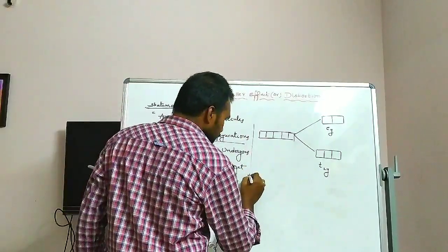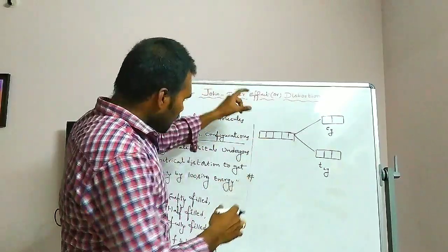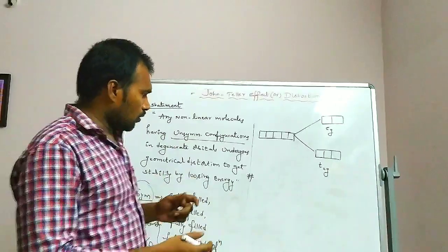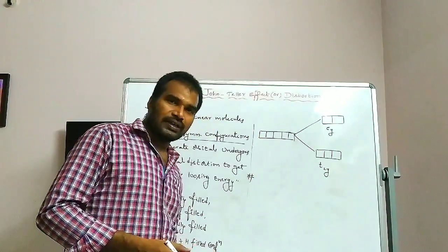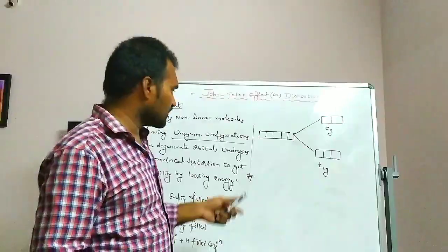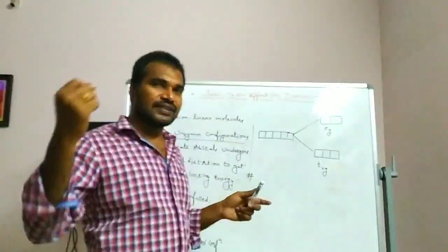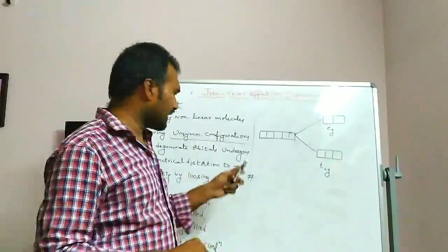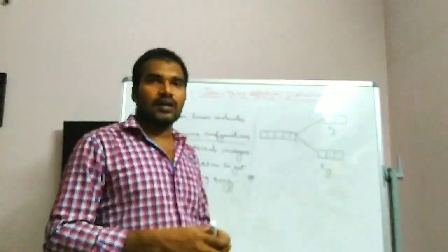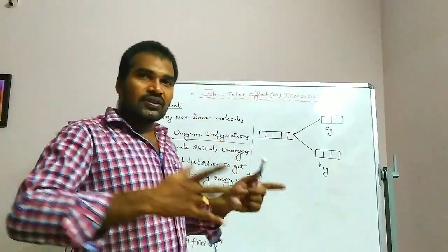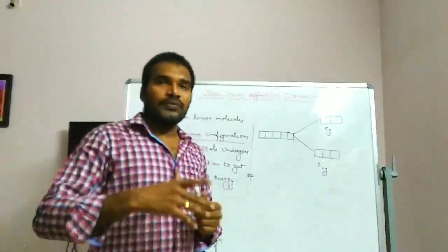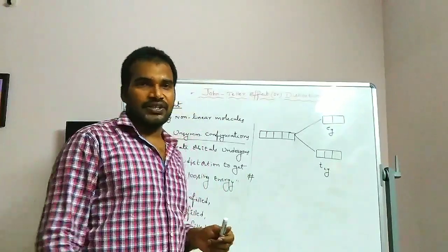Based upon this, I am going to draw all the D1 to D10 configurations. We will determine which configuration is symmetrical and which is unsymmetrical. Once that is clear, we can differentiate which metal complexes have regular geometries and which have distorted geometries.